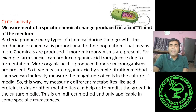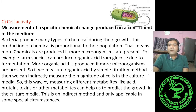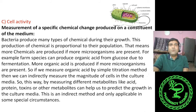The third category is cell activity — measurement of specific chemical changes produced in the media. When microorganisms grow, they produce chemicals such as proteins, acids, or other metabolites. By indirectly measuring these metabolites, we can measure the number of cells. For example, if a microorganism produces acid, more microorganisms will produce more acid, so by measuring the amount of acid in a sample, we can determine the number of cells.